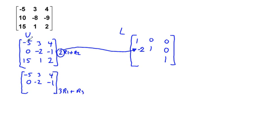So we take 3 times -5, which is -15, add it to 15, we're going to get 0. We take 3 times the top row, which is going to be 3 times 3 is 9, plus 1 is 10. And then we're going to take, for our last entry here, 3 times 4. What's 3 times 4? 12, plus 2, 14.